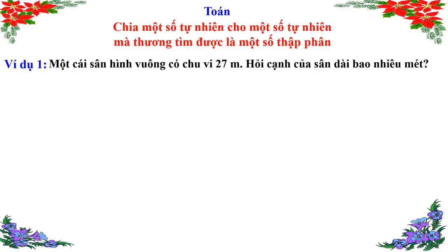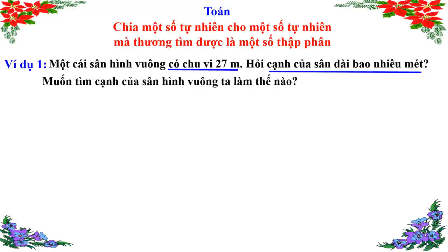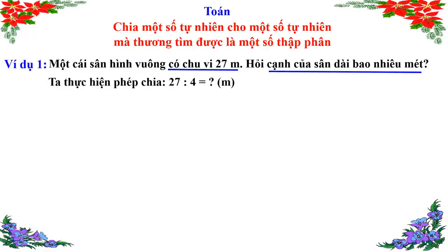Ví dụ 1: Một cái sân hình vuông có chu vi 27m. Hỏi cạnh của sân dài bao nhiêu mét? Bài toán cho ta biết chu vi là 27m; bài toán hỏi cạnh của sân. Muốn tìm cạnh hình vuông, ta lấy chu vi chia cho 4. Vậy ta thực hiện phép chia 27 ÷ 4 = ? Đây là phép chia số tự nhiên cho số tự nhiên. Các em lấy giấy nháp ra và cùng thực hiện phép chia này với thầy.